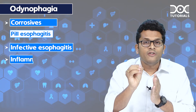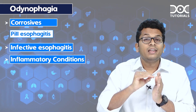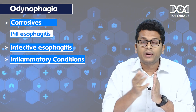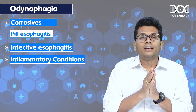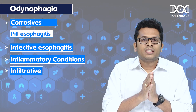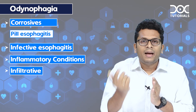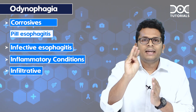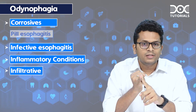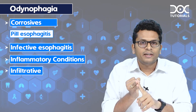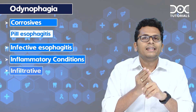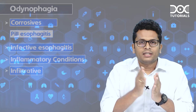The third is inflammatory conditions like severe reflux esophagitis, because there are ulcers and mucosal breaks — even there we can get odynophagia. The fourth mechanism is infiltrative, which can be in esophageal malignancies. So the four mechanisms are: external agents (corrosives or pills), infective, inflammatory, and infiltrative or neoplastic.